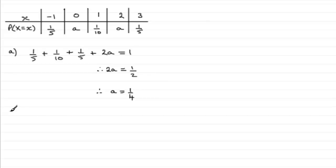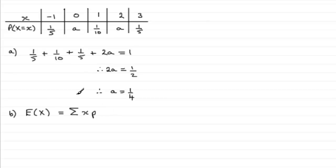Now in part B, they ask us to write down what E(X) is. Normally you would expect to work out E(X) — normally it is sigma, the sum of your x values times your probabilities: minus 1 times a fifth, 0 times an A, and so on, just add them together. But when it says 'write down' for one mark, it means the answer is meant to be obvious. And indeed it is — if you work this out, you'll find that you end up with 1.